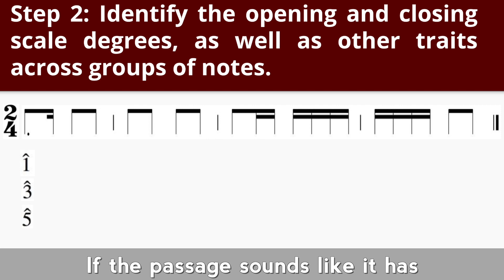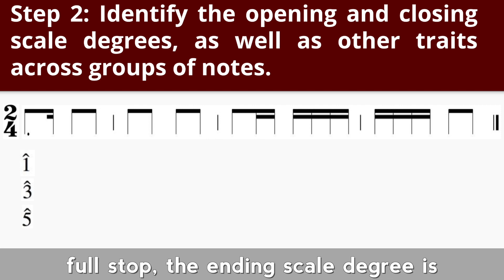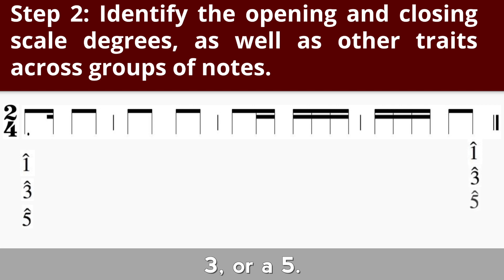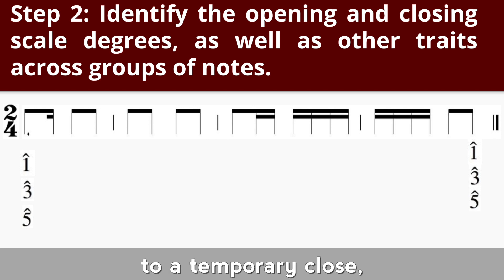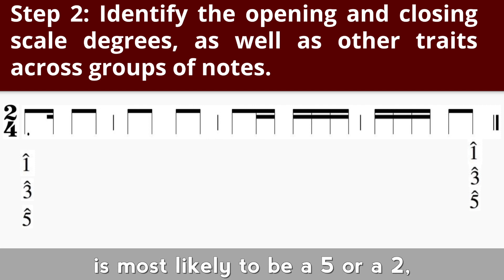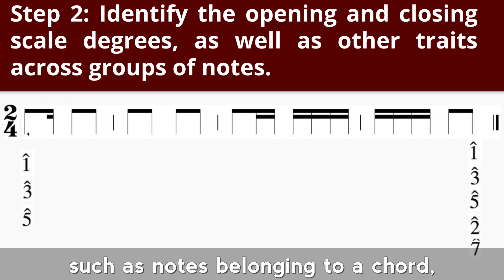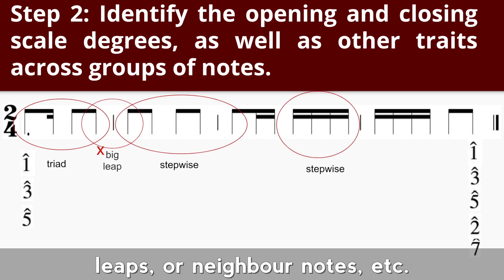If the passage sounds like it has come to a complete close, as if ending on a full stop, the ending scale degree is most likely to be one, or maybe even a three or a five. If the passage sounds like it has come to a temporary close, then the ending scale degree is most likely to be a five, or two, or even a seven. Look out for traits across groups of notes, such as notes belonging to a chord, notes running in stepwise motion, leaps, or neighbor notes.